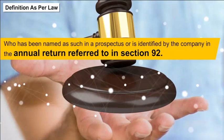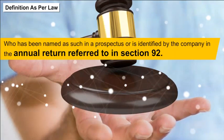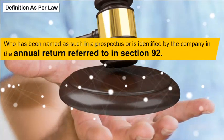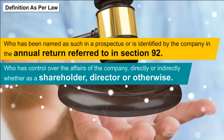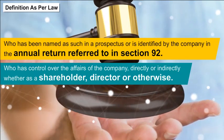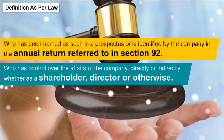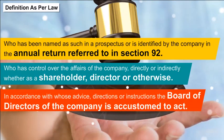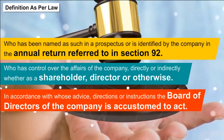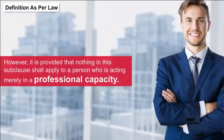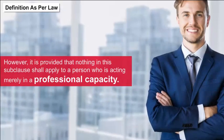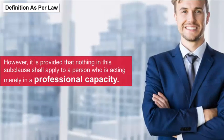Definition as per law: Under Section 269 of the Companies Act 2013, a promoter is: A. who has been named as such in a prospectus or is identified by the company in the annual return referred to in Section 92; or B. who has control over the affairs of the company directly or indirectly, whether as a shareholder, director, or otherwise; or C. in accordance with whose advice, directions, or instructions the board of directors is accustomed to act — provided this does not apply to a person acting merely in a professional capacity.